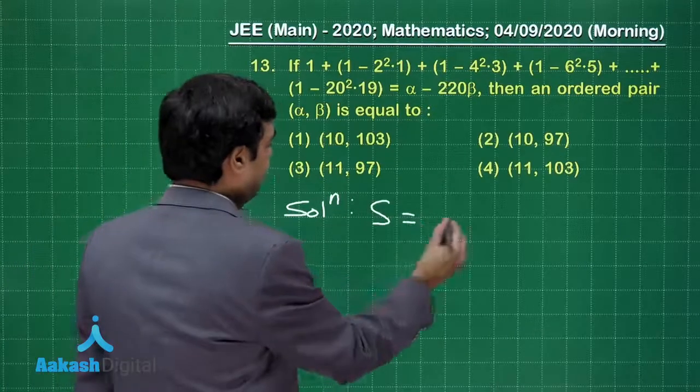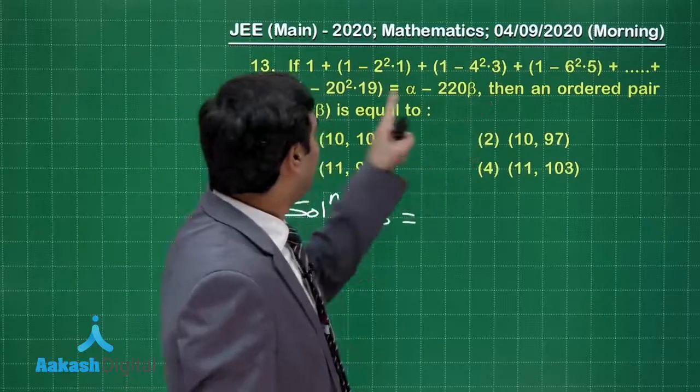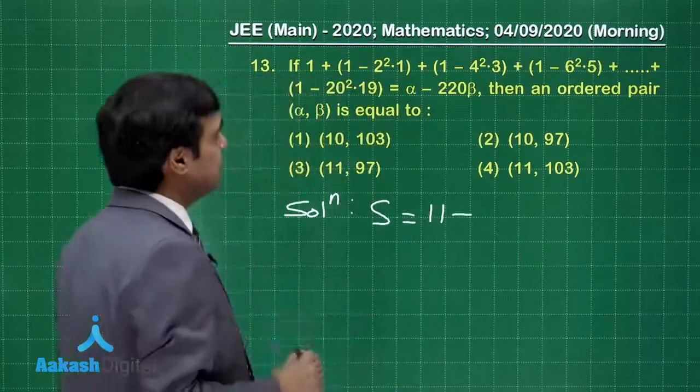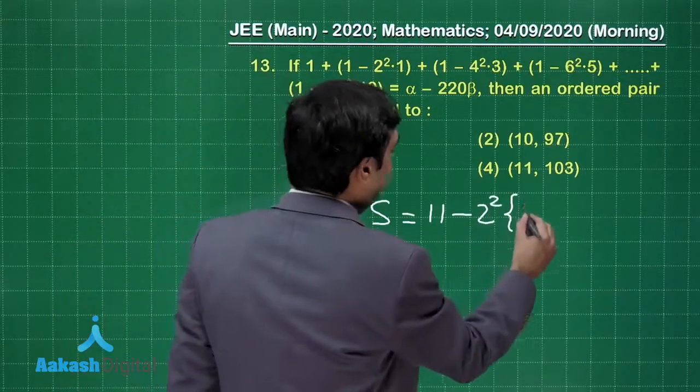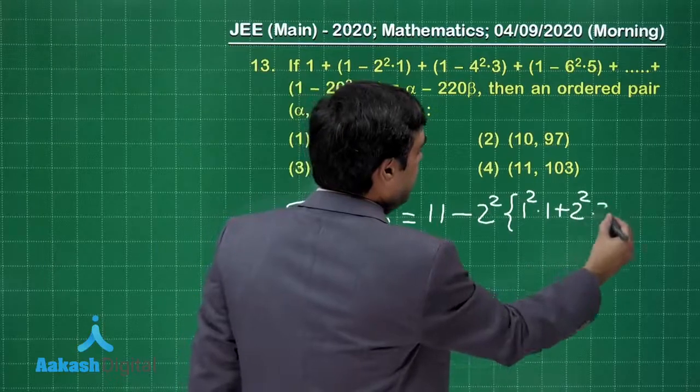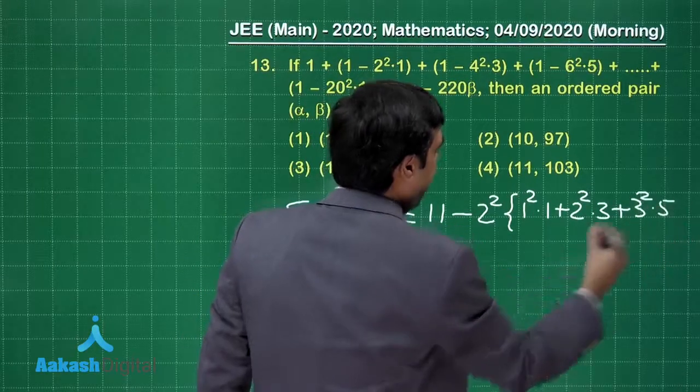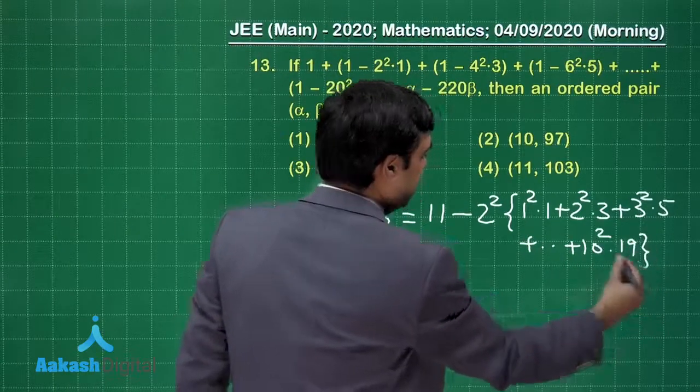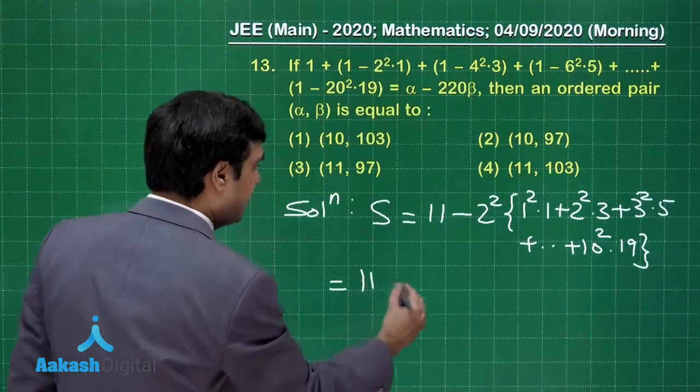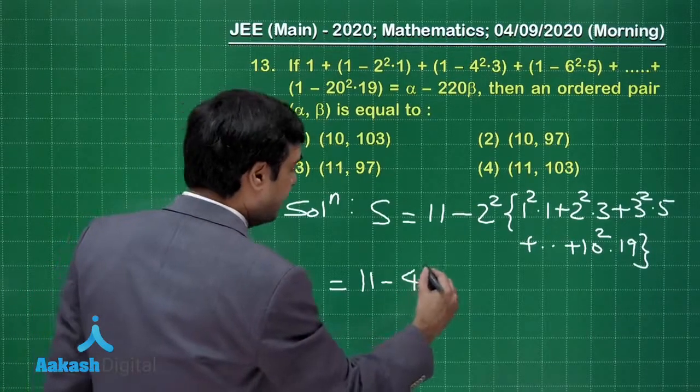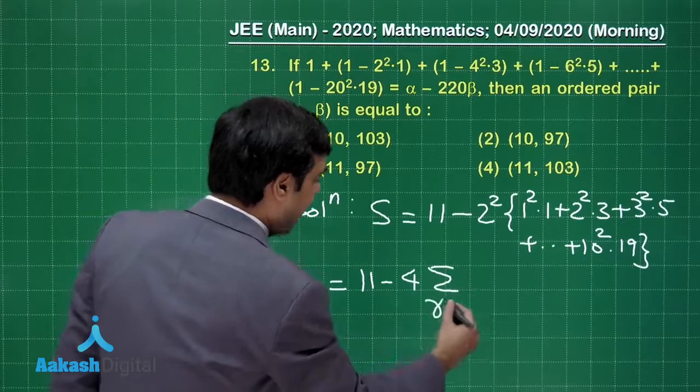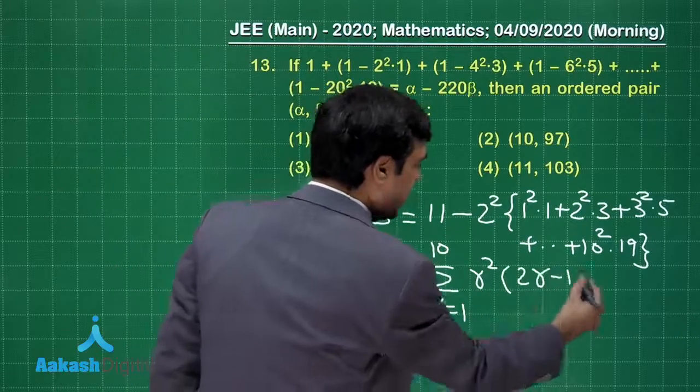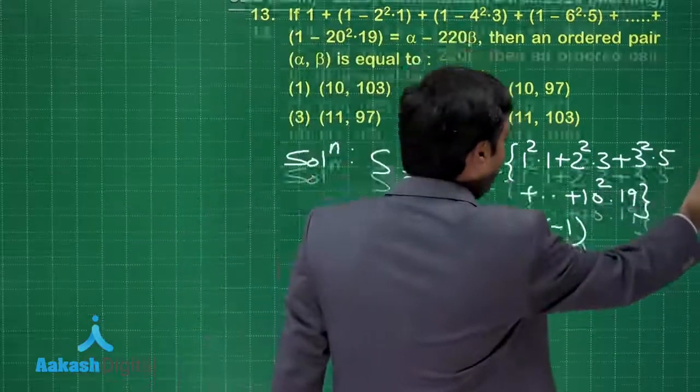Say this is S equal to 1 plus... we can clearly see it is 11 times. From rest of the series we can take 2² common; we are left with 1² into 1, 2² into 3, 3² into 5, till 10² into 19. Or 11 minus 4 multiplied with summation r equals 1 to 10 of r² into 2r minus 1.